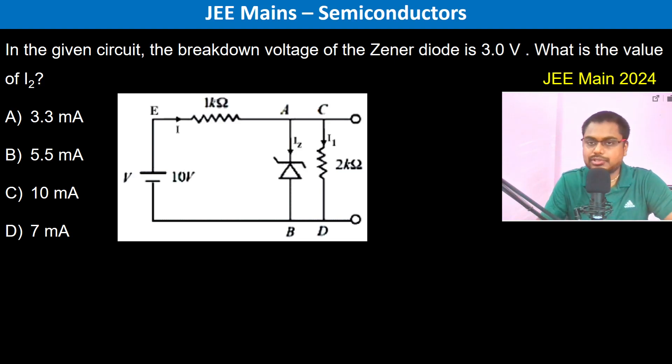In the given circuit, the breakdown voltage of the Zener diode is 3 volts. What is the value of I2?